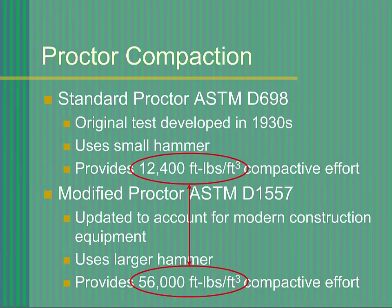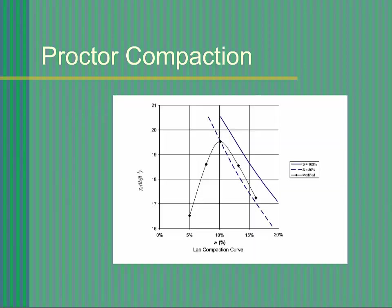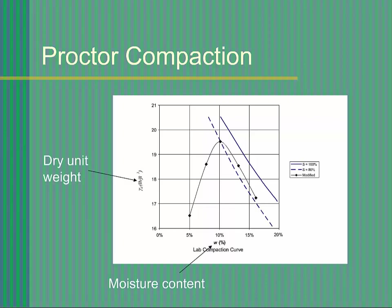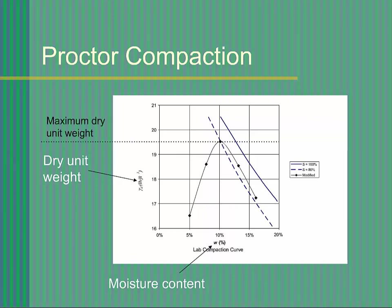We will be conducting the modified Proctor tests on our soil samples. The test is used to determine the relationship between compaction moisture content and dry unit weight. Most often, you compact the soil in the laboratory to obtain the maximum dry unit weight, then require a contractor to achieve some specified percentage of this value in the field. The higher dry unit weight values indicate higher fill quality.